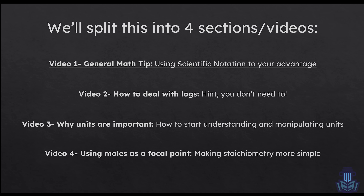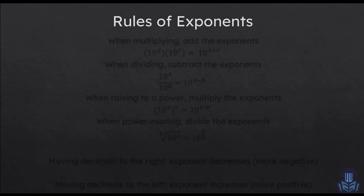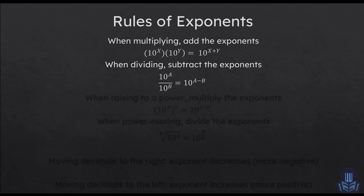Today we're going to be mainly talking about scientific notation, and in order to do so we need to talk about the different rules of exponents, because scientific notation has exponents that we're going to be doing some math with. Whenever you're multiplying, you always add the exponents together — you don't touch the base of 10 at all. Whenever you're doing division of scientific notation, you're going to subtract the exponents from each other; basically you're just subtracting b from a.